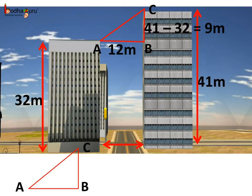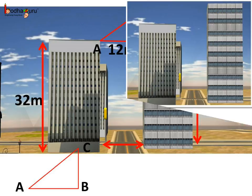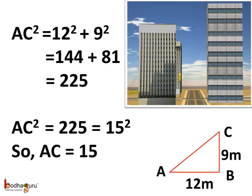So the distance between the tops of the two buildings is AC. According to the Pythagoras theorem, AC² = 12² + 9², which is the square of the base plus the square of the perpendicular. Hence AC² = 144 + 81 = 225, and since 225 = 15², AC equals 15 meters. And this we found using the Pythagoras theorem.